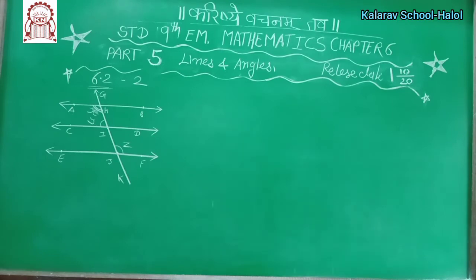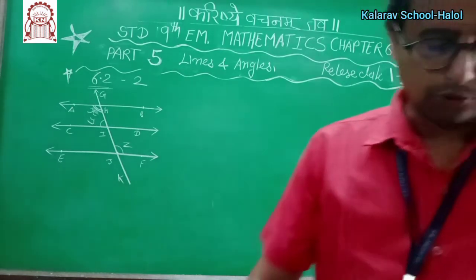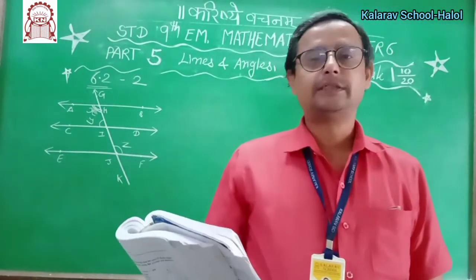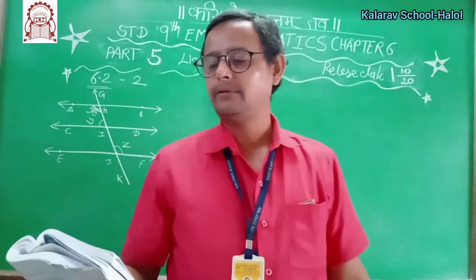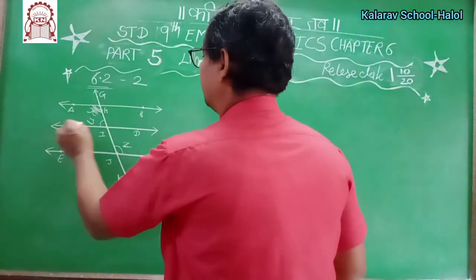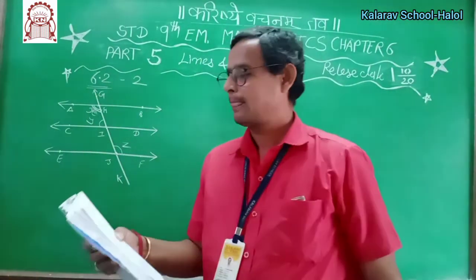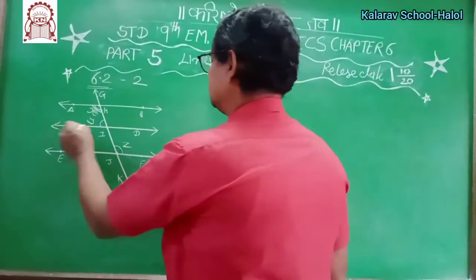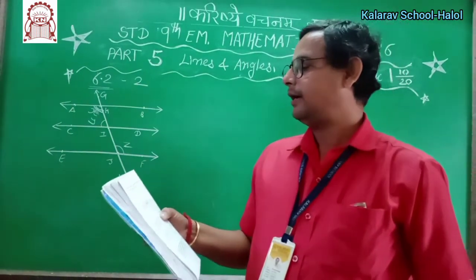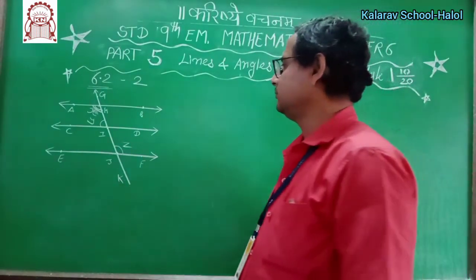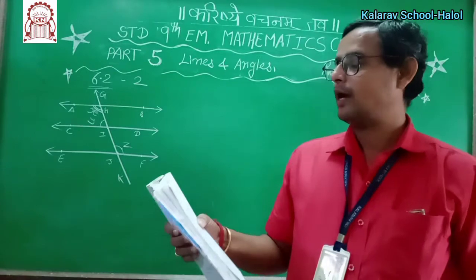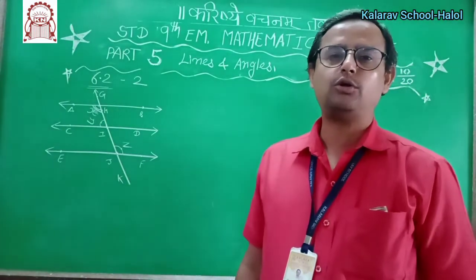Now see this sum — it is also a unique kind of sum. This is the second sum. Here it is given that AB is parallel to CD, and CD is parallel to EF. And Y is to Z as 3 is to 7 — their ratio is 3 is to 7.